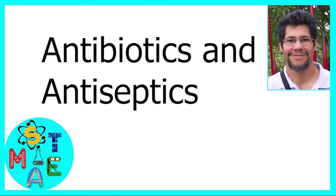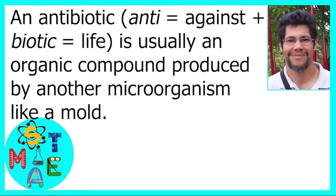Today's episode: antibiotics and antiseptics. One way to control bacterial growth, especially pathogenic bacteria, is by the use of antibiotics and antiseptics. An antibiotic, from the word anti — meaning against — and biotic — meaning life — is usually an organic compound produced by another microorganism, like a mold. This naturally produced organic compound inhibits the growth of or destroys other microorganisms.